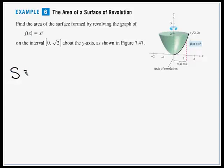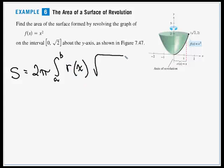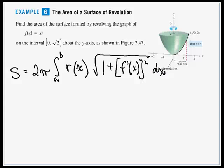The surface area formula is 2π integrated from a to b of r(x) times the radical of 1 plus f′(x) quantity squared, dx.